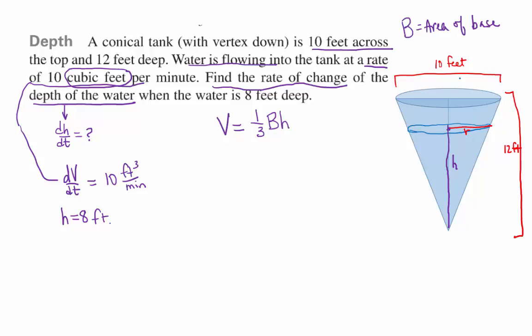So in this case, the area of the base is going to be pi R squared, because it's a circle. So the volume of a cone is 1/3 times pi R squared times H. Notice that the variable that I was given, H and DV/DT, I was given, and I was asked to find DH/DT. Did you see any R's in there anywhere? No.